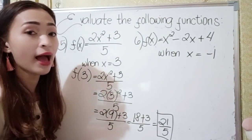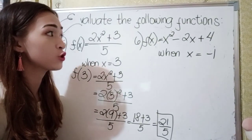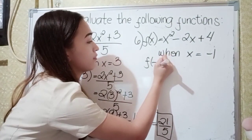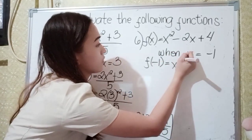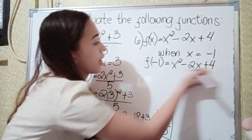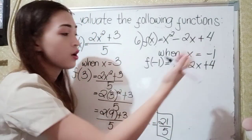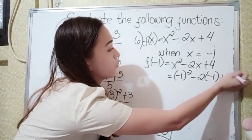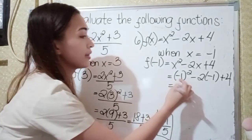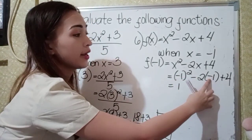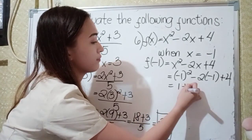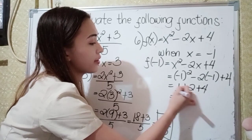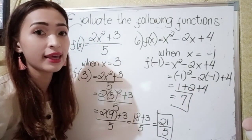For number 6, we have f(x) equals x squared minus 2x plus 4, when x is equal to negative 1. Substitute negative 1 to x. So f(negative 1) equals negative 1 squared minus 2 times negative 1 plus 4. Negative 1 times negative 1 is 1. Negative 2 times negative 1 is positive 2, plus 4. So 1 plus 2 is 3, plus 4 is 7. Our final answer in number 6 is 7.